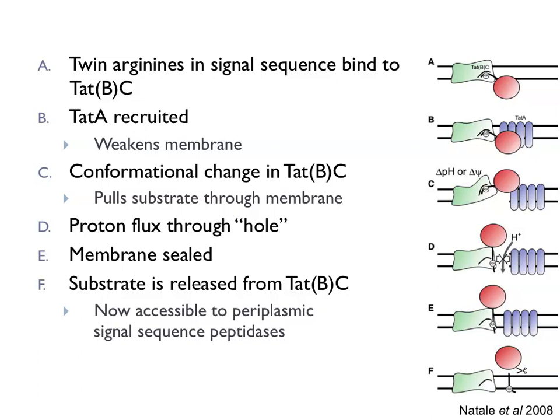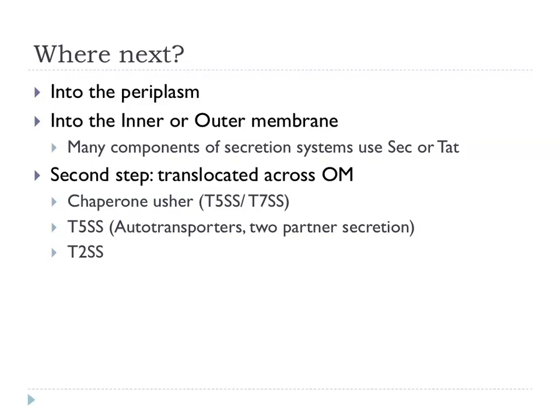With systems like Sec and TAT, we get proteins across the cytoplasmic inner membrane into the periplasm of gram-negatives. Many proteins simply fold up and have a role in the periplasm — there are at least 100, probably more than 100 proteins that inhabit the periplasm in gram-negative bacteria. Some proteins will be targeted into the inner or outer membrane as integral membrane proteins. But if things are going to get outside the cell, we need a second step: translocation across the outer membrane.